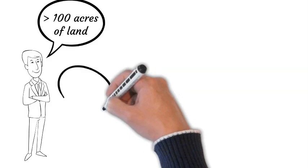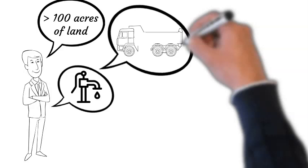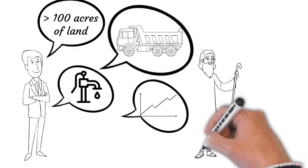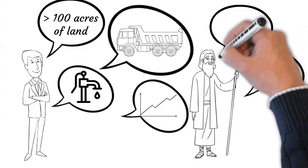Not surprisingly, most tractors were owned by those with more than 100 acres of land. Almost 75 percent of privately owned tractors were on farms that had also sunk tube wells. Farmers who owned both a tractor and a tube well had the highest cropping intensity, while the lowest occurred on farms with no access to a tube well or using only bullock power.